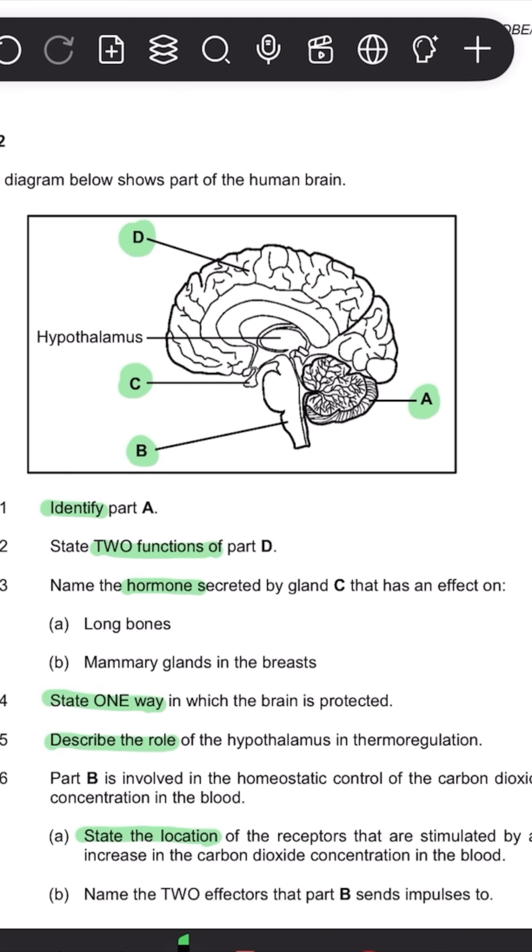And then the next one says name the two effectors of part B. So again, doesn't ask you what is part B, but now you need two effectors. So ensure to put two. So just ensure to give them exactly what they want to maximize your marks.